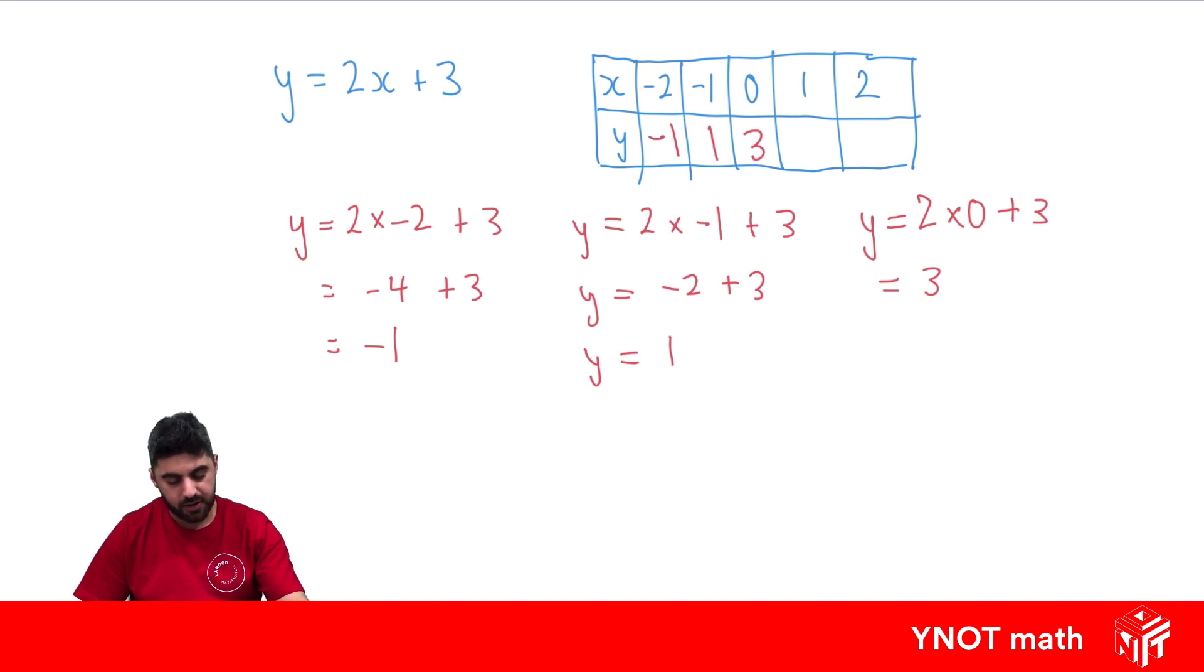You might be able to see that it's going up by 2. Let's just double check. So y equals 2 times x. x is now 1 plus 3. 2 times 1 is 2. 2 plus 3 is 5. And as expected, it's going up by 2. So we get 5. Now last one. 2 times x. Well x is now 2, plus 3. 2 times 2 is 4. Plus 3 gives us 7.